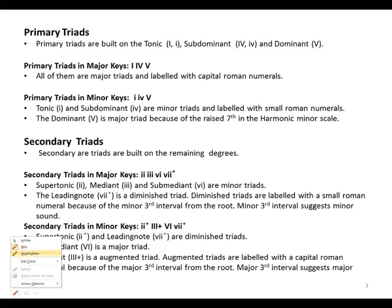Looking at the example, the triad is built on the tonic, the subdominant which is F, and the dominant which is G. Primary triads are built on the tonic, the subdominant, and the dominant of the scale — meaning the one, the four, and the five of the scale.